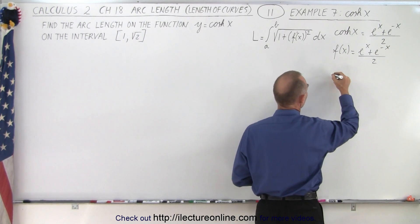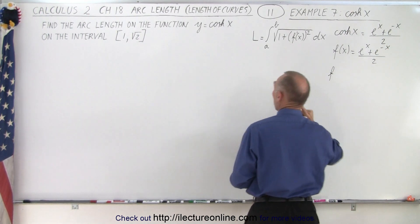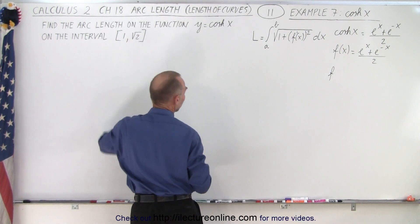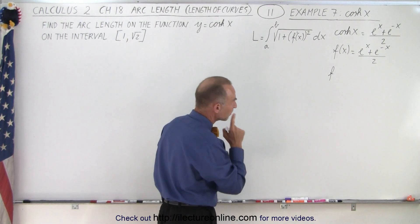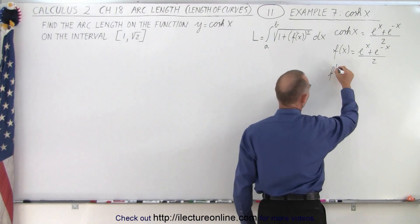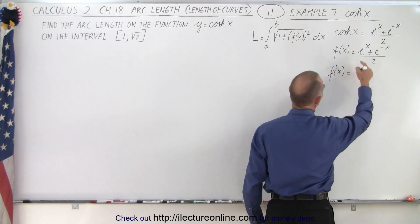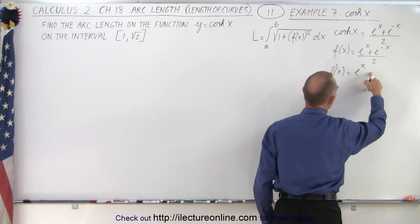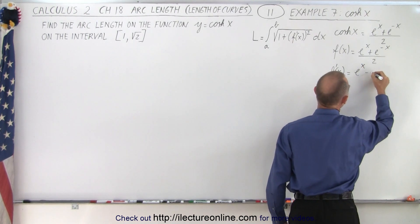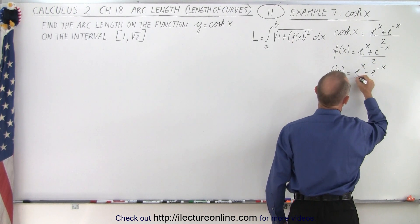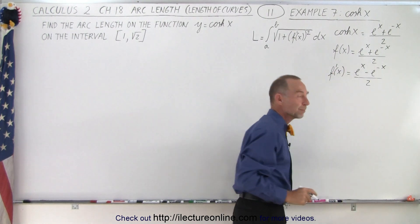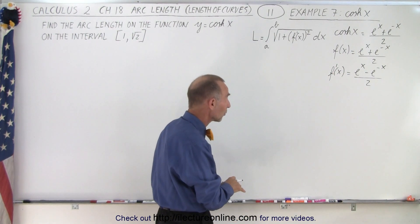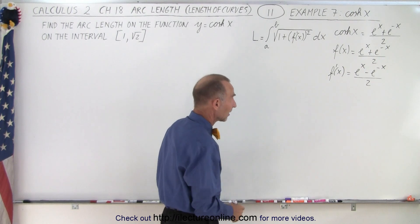Now we take the derivative of that because we're trying to find the arc length on the interval of the curve from 1 to the square root of 2. So we take f prime of x. The derivative of e to the x is simply e to the x, the derivative of e to the minus x will be minus e to the minus x, still divided by 2. So the derivative of the hyperbolic cosine is the hyperbolic sine.